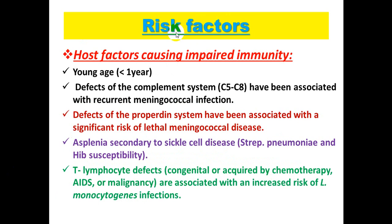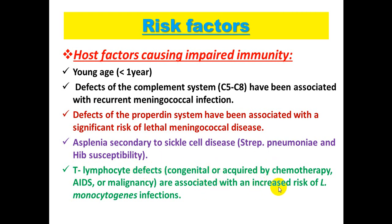Risk factors for meningitis include host factors, environmental factors, and others. Host factors causing impaired immunity include age younger than one year, defects in the complement system (C5–C8) associated with recurrent meningococcal infections, defects in the properdin system associated with lethal meningococcal disease, asplenia due to sickle cell disease increasing risk of encapsulated bacteria like S. pneumoniae and H. influenzae type B, and T lymphocyte defects associated with increased risk of Listeria monocytogenes infections.